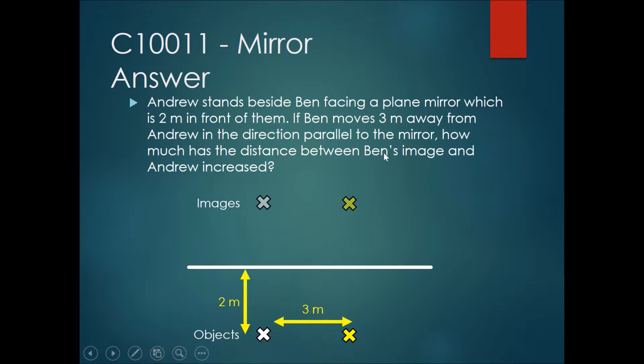Firstly, we need to know how far Ben's image was from Andrew's body at the start. Ben's image was previously over here. Let's just say that it was at the same position as Andrew's image.